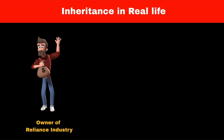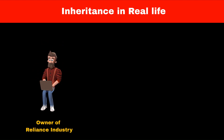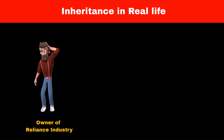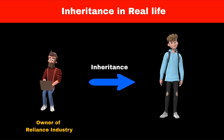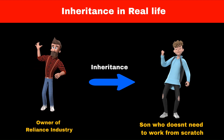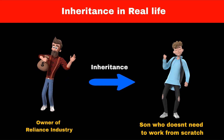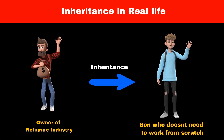Consider the example of Mukesh Ambani, who is owner of Reliance industry. He spent millions of dollars and 50 years of his life building Reliance industry. But now it's time for him to retire. Mukesh Ambani has a son who will inherit the Reliance industry from his father, meaning he doesn't have to work from scratch to build a company. He can reuse whatever his father has built and create his own legacy with it. This concept where a son gets his father's money, responsibility, and characteristics is called inheritance.